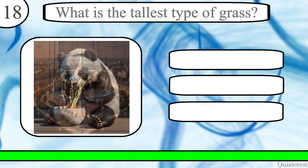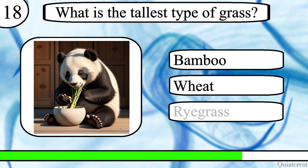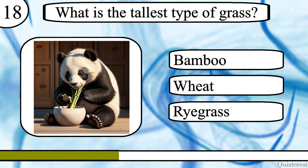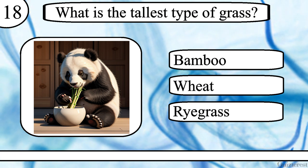Question 18. What is the tallest type of grass? Bamboo, wheat or ryegrass? The correct answer is bamboo.